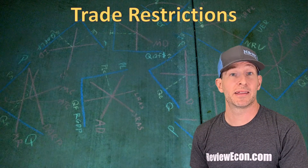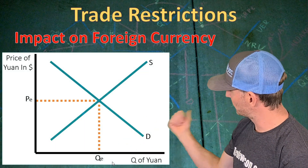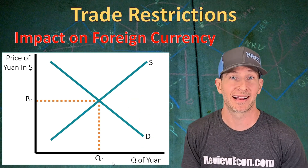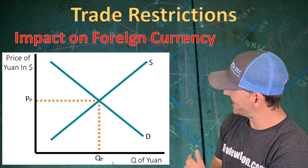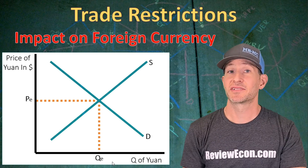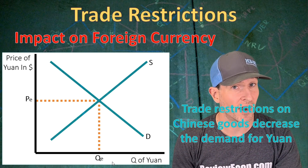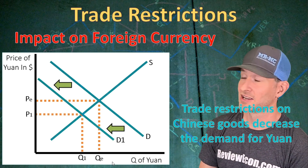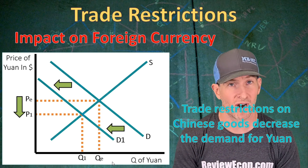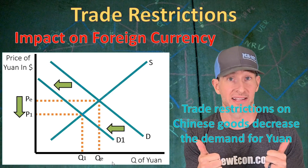On the flip side, let's take a look at the impact on the foreign currency — in this case, the Chinese yuan. Here we have the foreign exchange market for the Chinese yuan, with quantity of yuan on the x-axis and the price of yuan in US dollars on the y-axis. Again, we have a downward sloping demand curve, an upward sloping supply curve, and the equilibrium exchange rate and quantity marked. Since those trade restrictions are going to reduce the amount of exports from China, the demand for Chinese yuan is going to decrease, shifting that demand curve to the left and causing the equilibrium exchange rate to decrease — the Chinese yuan has depreciated. Whenever one currency appreciates, the alternative currency depreciates, and vice versa.